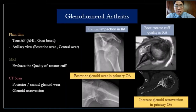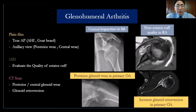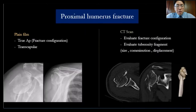For osteoarthritis, you need all investigations, because you need to check the quality of the rotator cuff. Sometimes the patient has arthritis but poor cuff quality. CT scan will detect the retroversion of the glenoid. In osteoarthritis, you need three investigations: X-ray, MRI, and CT scan. For proximal humerus fractures, most of the time I just need X-ray and CT scan to see the fracture morphology.